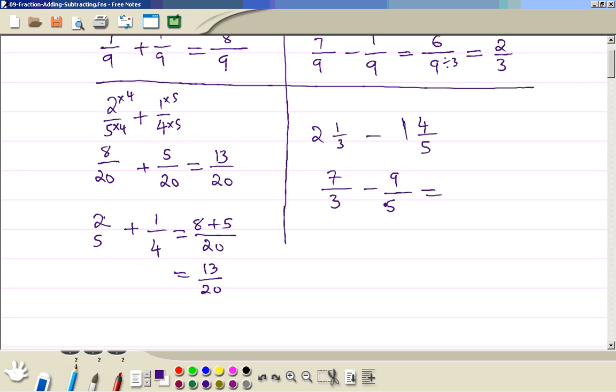Now cross-multiply. 7 times 5 minus 3 times 9 divided by 3 times 5. So that's 8 divided by 15.